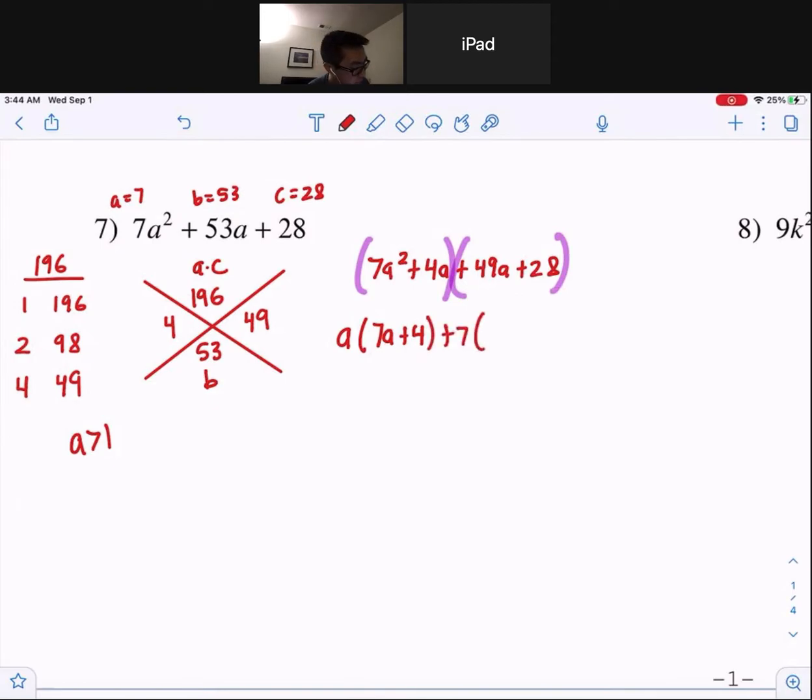49 divided by 7, 7a. 28 divided by 7, 4. And you guys, look, both of those match up. So, you can take away by factoring out 7a plus 4 from both of them. So, 7a plus 4, and then the leftovers write a plus 7.